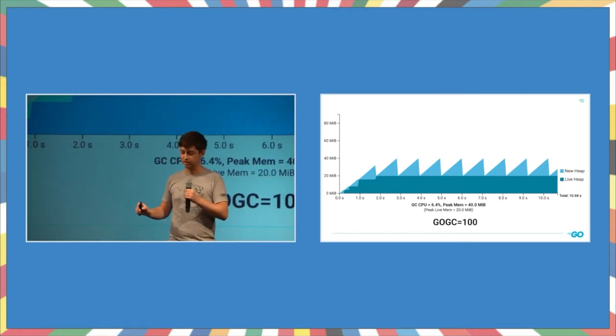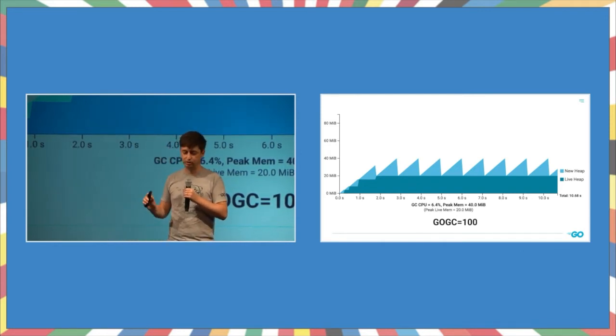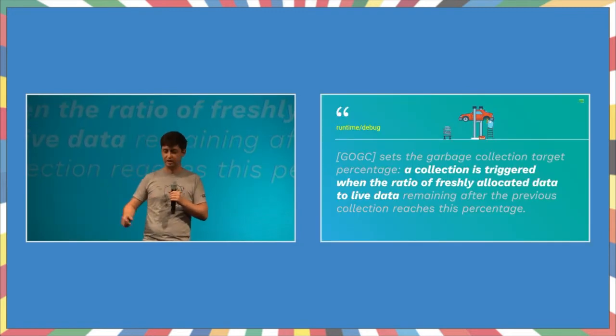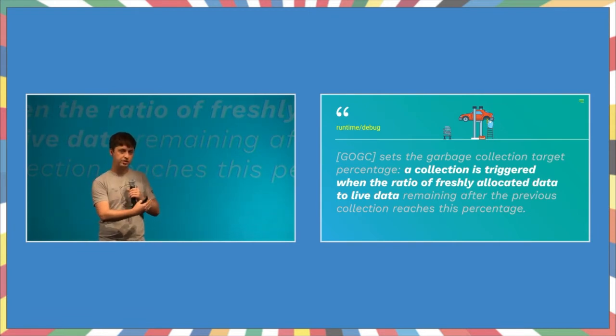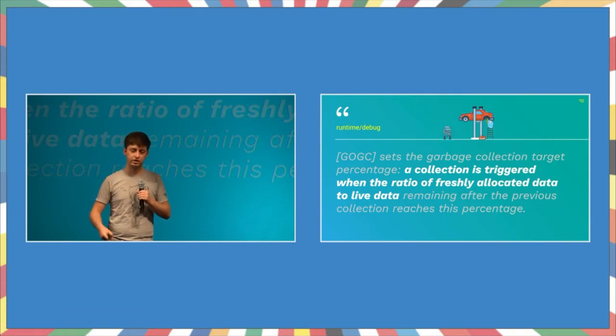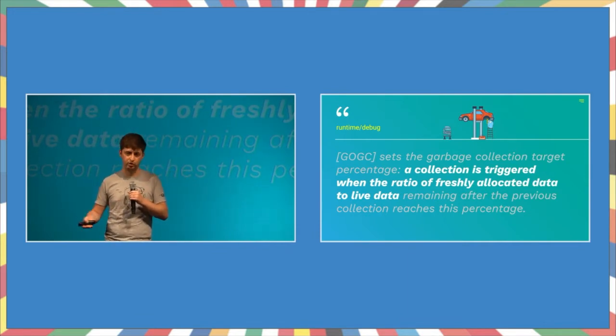So one thing I omitted in all this is when does the GC actually decide to execute? And today, that is primarily controlled by a tuning parameter called GoGC. And in this graph, the GoGC value is 100, which is the default value. What does that mean? Well, the official definition here is on the slide. It's like a target percentage, but I find it more intuitive to think about as overhead. So a GoGC of 100 is 100% overhead over your live heap. So it's 2x. 200 is 200% or 3x. 50 is 50% or 1.5x.